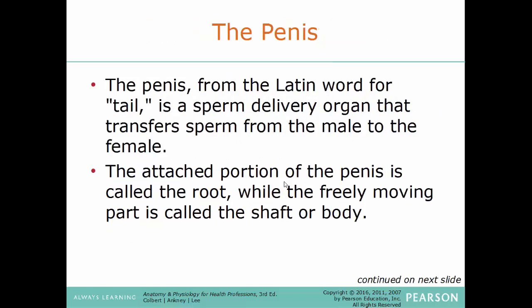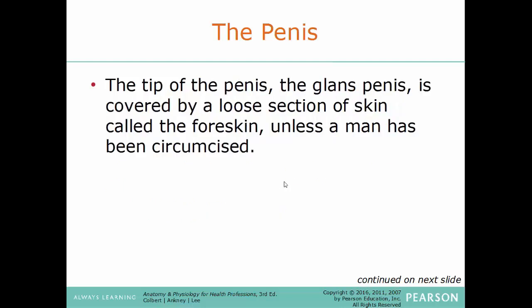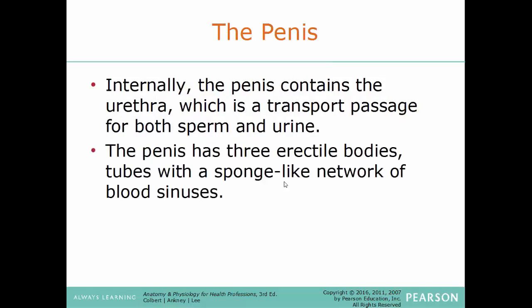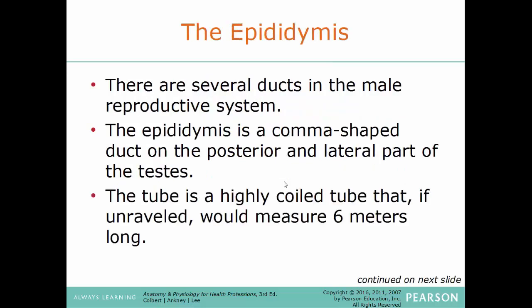The penis — from the Latin word meaning 'tail' — is the delivery organ for sperm. The attached portion is called the root, the freely moving part is the shaft or body, and the tip is the glans penis, covered by a loose section of skin called the foreskin or prepuce unless the man is circumcised. Internally, the penis contains the urethra, which transports both sperm and urine — a dual function for males. Also internally you'll find three erectile bodies, which are tubes of spongy tissue with a network of blood sinuses; this is how the penis becomes erect as blood engorges the tissue.